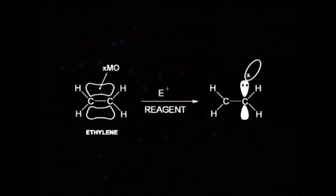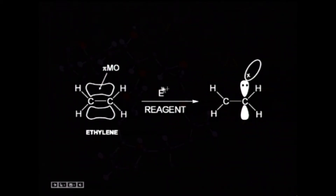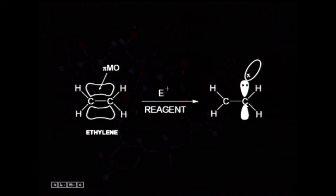This is illustrated by the orbital diagram of ethylene, which has a pi molecular orbital. In the presence of an attacking reagent, this pi MO is broken and two electrons are shifted onto one atom. As a result, that carbon atom possesses a negative charge and the other possesses a positive charge.